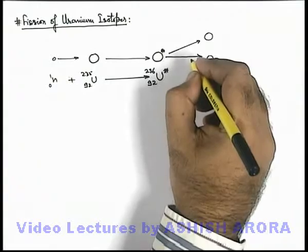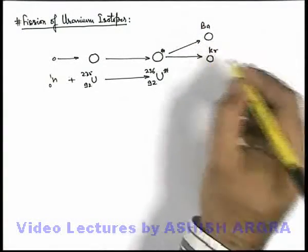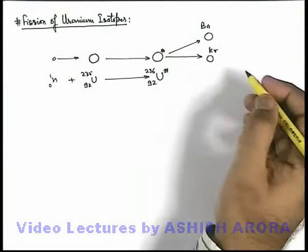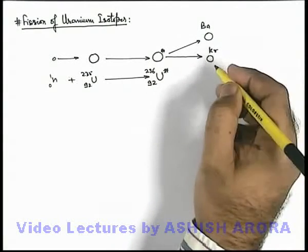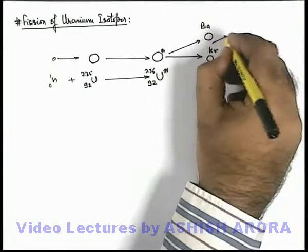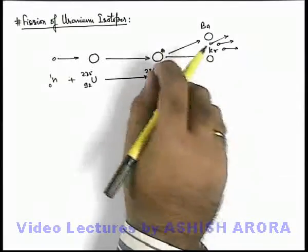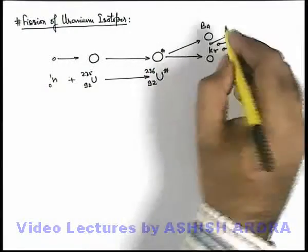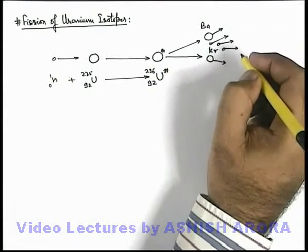Two other nuclei, which are basically barium and krypton. There are many different possibilities; we'll see more possibilities also, but this is the possibility in which the yield of products is maximum. In parallel, three neutrons are also emitted. Due to excess energy, it explodes, and in the small explosion, these two major nuclei and three neutrons are ejected out.